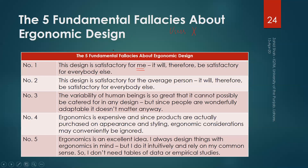The second fallacy — and the third and fifth are even more important to understand — is that this design is satisfactory for an average person, and it will therefore be satisfactory for everybody else. This is perhaps the most common fallacy. If we have to design a product for a population of 1000 people and can only make one size, we need to decide the dimensions of that chair or any other product.